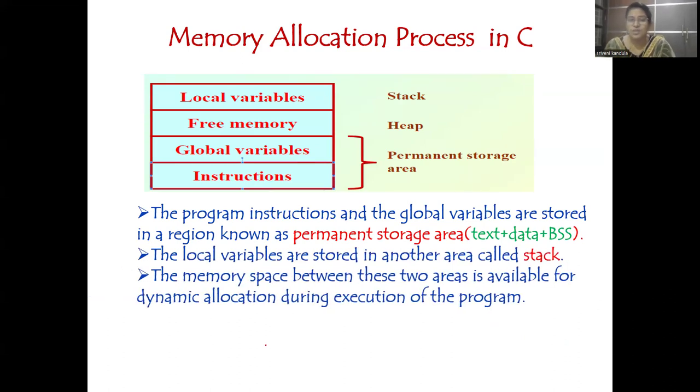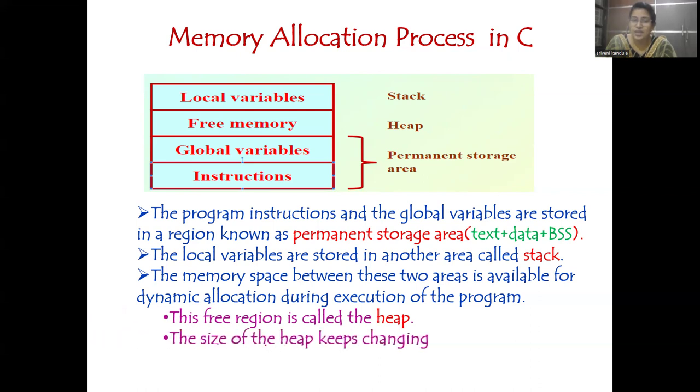Now, if you see the memory space between the two areas that is available for the stack, in between the permanent storage area and the stack, we have the area for the heap. What will be stored in this heap is all the dynamically allocated variables. So when you are talking about dynamic memory allocation, which part of memory location are we using? We will be using the memory allocated for the heap. And the size of this heap keeps changing depending upon the number of variables that you have for which you are allocating memory dynamically.